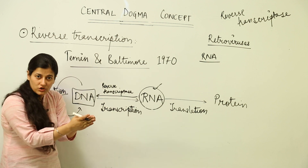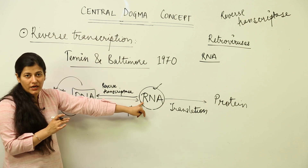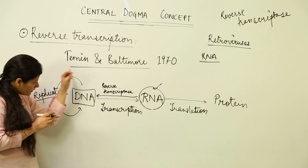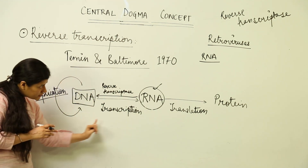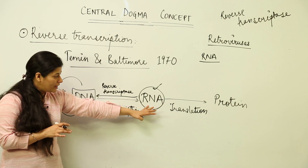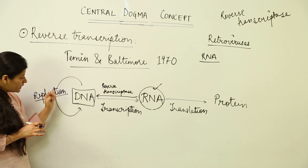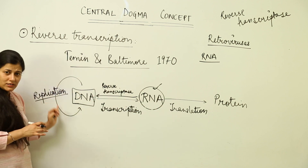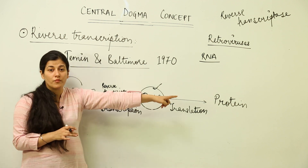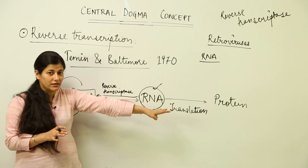So when this virus has to carry out infection, what it does is convert its RNA first into DNA, and then the rest of the central dogma process is carried out. RNA first needs to be converted to DNA; then this DNA can replicate itself, and then the DNA goes on to form the protein.